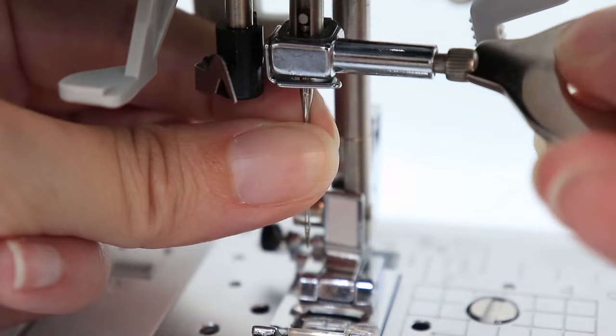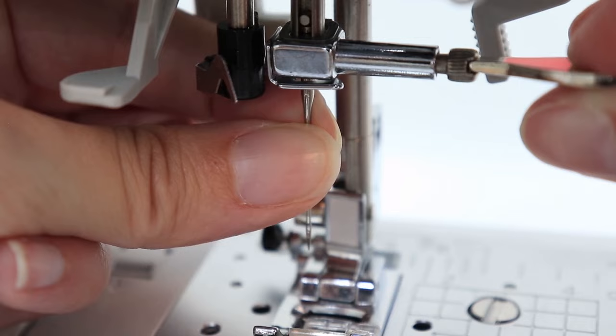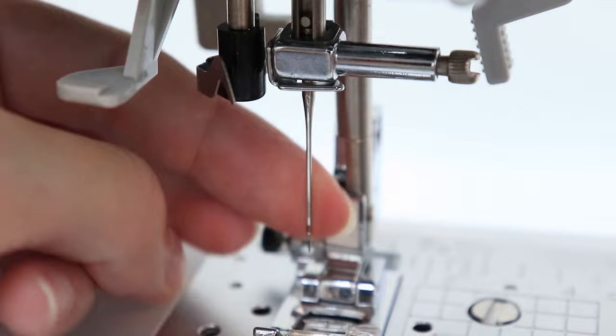Hold it all the way up to the top as high as it'll go and then tighten your screw. You do want it to be pretty tight so that you can make sure it's not going anywhere. Turn it gently until it won't go anymore.